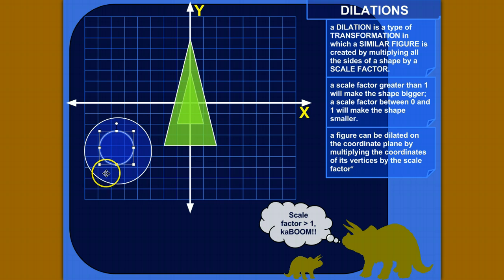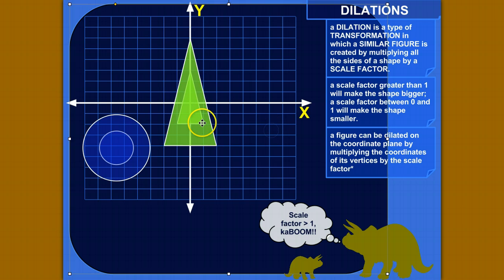So it's a kind of transformation, and the figures—the original figure and then the dilated version of itself—are similar figures because it maintains the same shape.